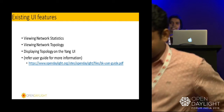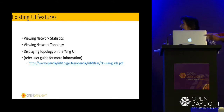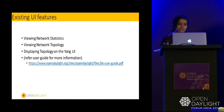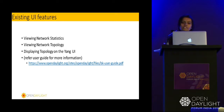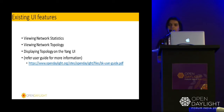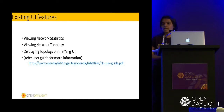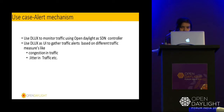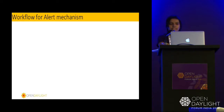What basically this alert mechanism is: in this alert mechanism, the user can see the status of particular network traffic, and the user can capture alerts based on different traffic measures. For example, if there is congestion in traffic or if there is jitter in traffic, the user can see that through DLux itself. Green color indicates normal traffic flow; red color indicates congested traffic or jitter in traffic.